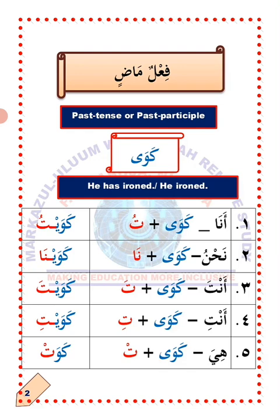Wahid, number one — Anna, I. So how do we change the verb kawa to suit Anna? All you need to do is to attach ta'un carrying dhamma to the last letter. Not only that, you give sukun to the letter before it. The verb kawa will now become kawaitu, which means 'I have ironed.' The part of the verb representing me as the speaker is the ta, as indicated in red color.